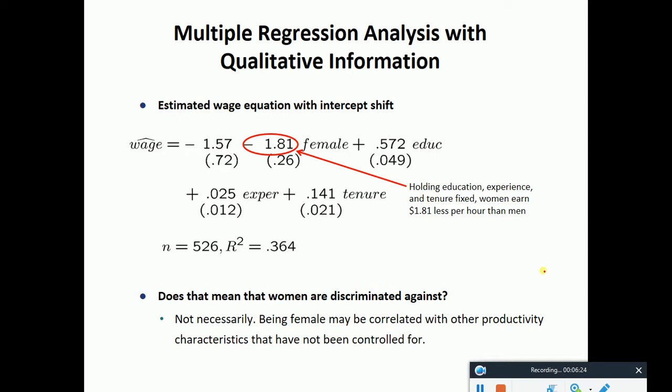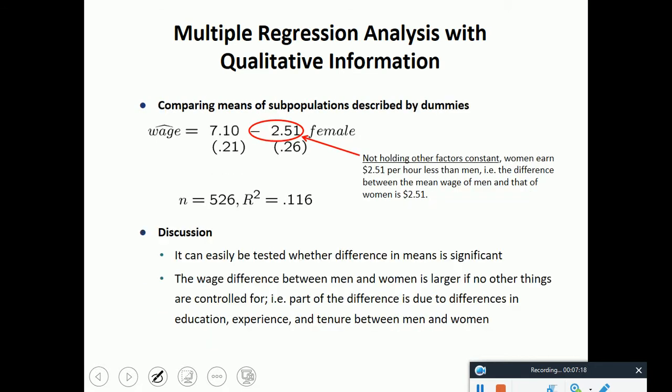Estimated wage equation with intercept shift. Holding education, experience, and tenure fixed, women earn $1.8 less per hour than men. Does that mean that women are discriminated against? Well, not necessarily because female may be correlated with other productivity characteristics that have not been controlled for. There could be other characteristics which are not being captured here.